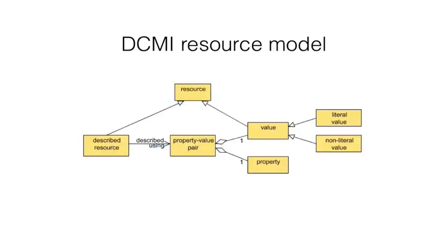The Dublin Core abstract model is a data model for Dublin Core in the same way that an entity relationship diagram is a data model for the entities in a database. The Dublin Core abstract model is essentially an entity relationship diagram for metadata.